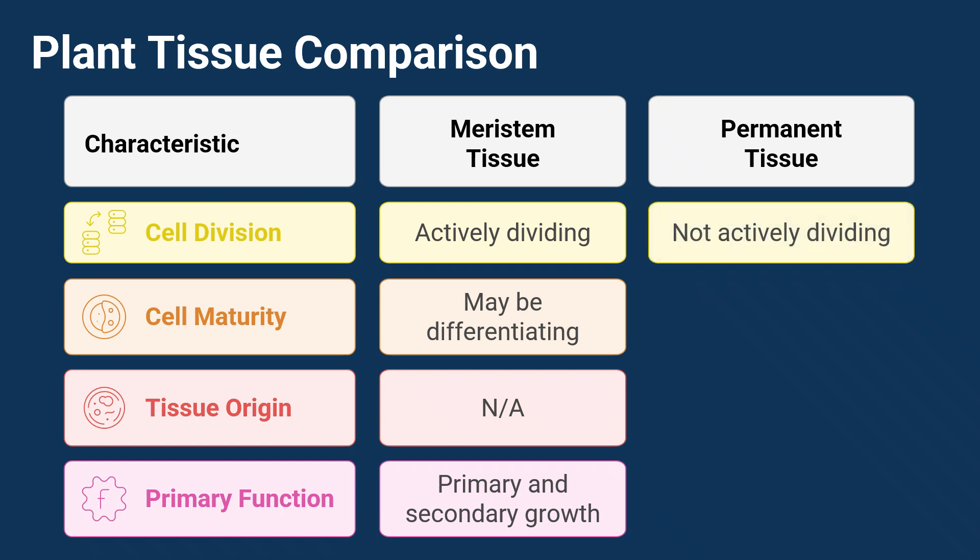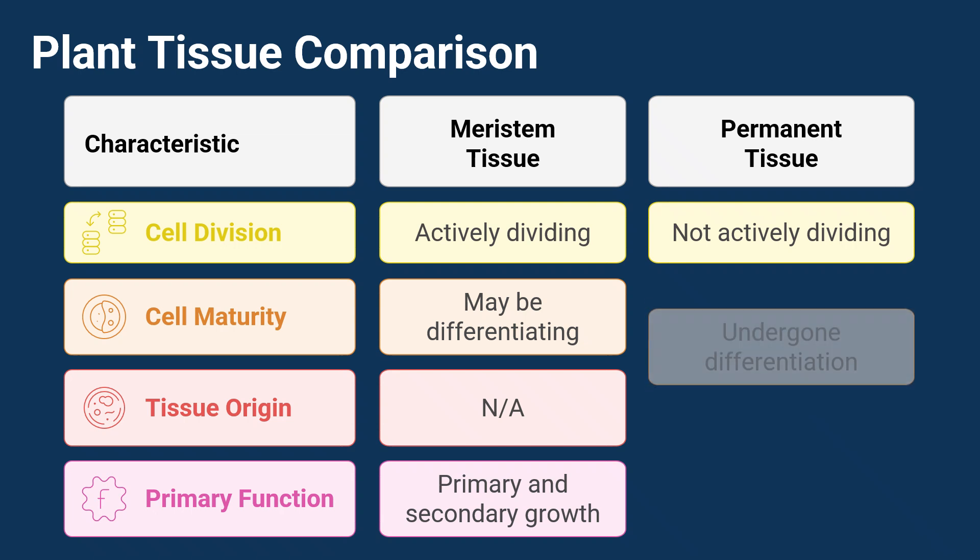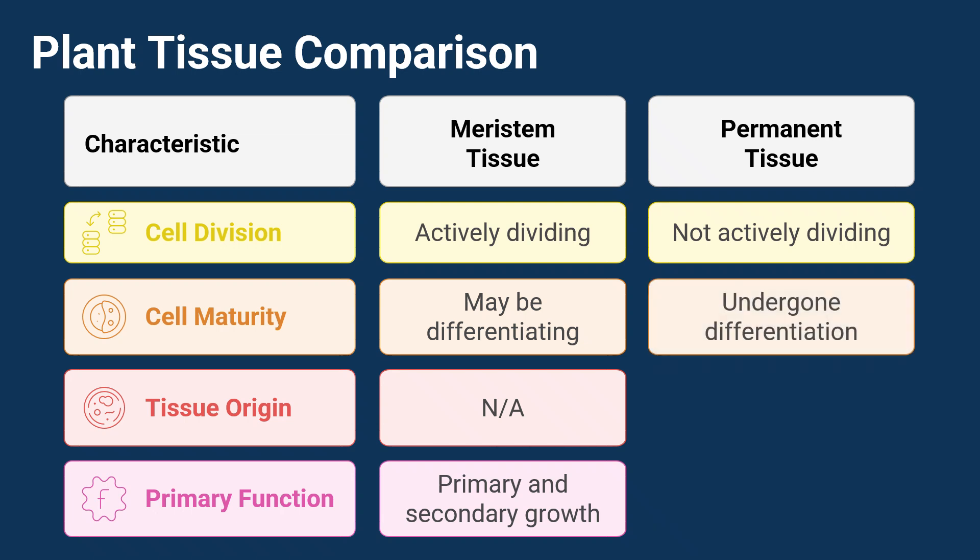Cell division. Cells in permanent tissue are not actively dividing. Once they formed from meristematic tissue, they stopped splitting and get busy with their special jobs. Cell maturity. These cells have undergone differentiation. That means they've matured and become super specialized to do particular things in the plant, like protecting it, holding it up, or moving stuff around.